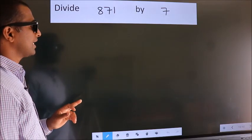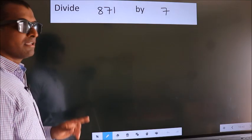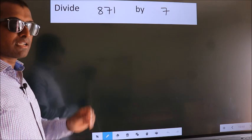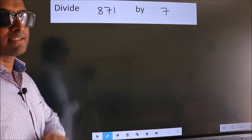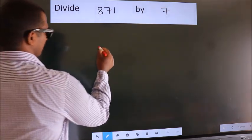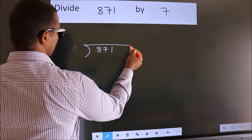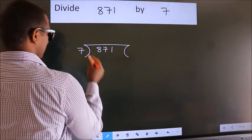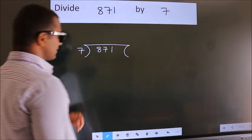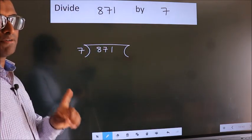Divide 871 by 7. To do this division, we should frame it in this way: 871 here, 7 here. This is your step 1.